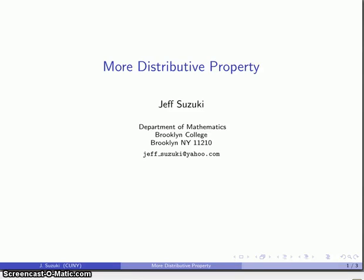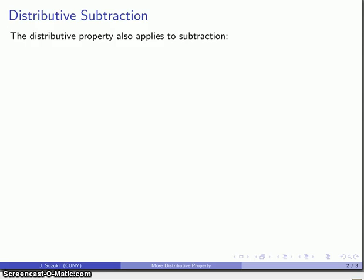Now there's many variations on a theme of multiplication by using the distributive property, and here's one example. We might use what's called distributive subtraction because the distributive property also applies when we are subtracting. So if I have A times the product B minus C, I get the product A times B minus the product A times C. And this gives us the flexibility to find another way of multiplying two numbers.